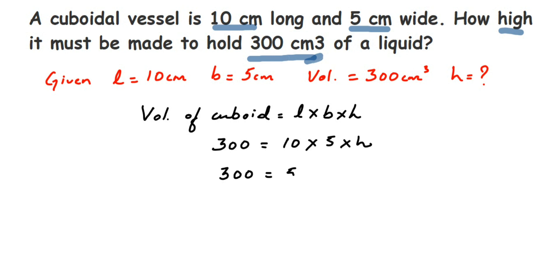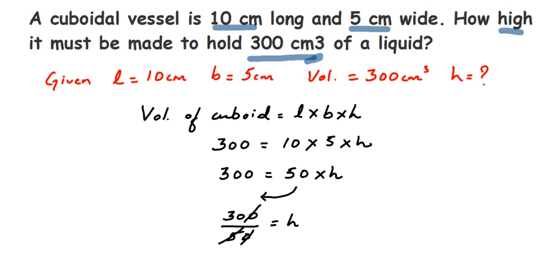We have to find H, so we transpose 50 to the other side — it gets divided. So 300 divided by 50 equals height. Cancelling the zeros and simplifying: 30 divided by 5 is 6. So the height is 6 centimeter.